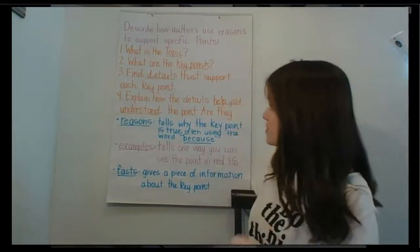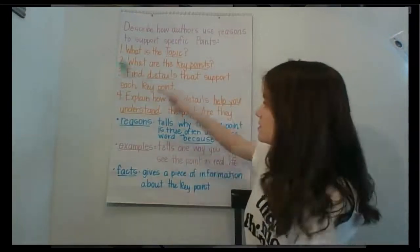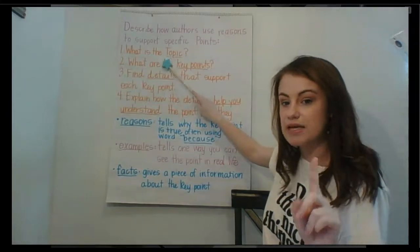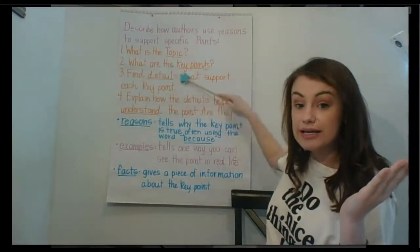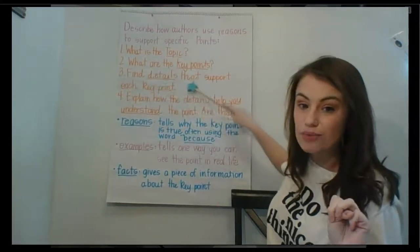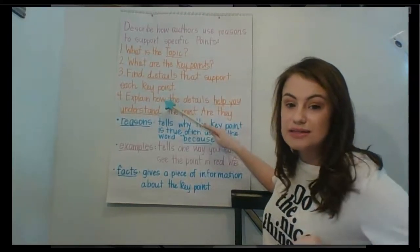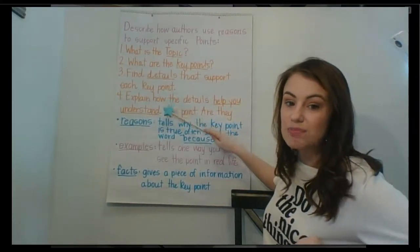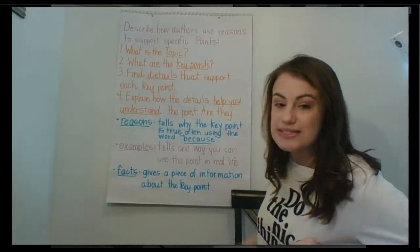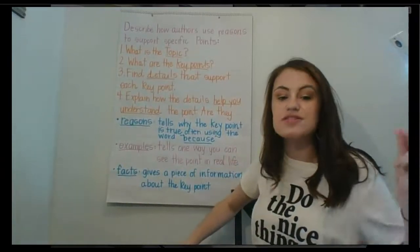I'm going to tell you the four steps that will help you describe how authors use reasons to support their key points. Step one: what is the topic? Step two: what are the key points? Step three: find details that support each key point. Step four: how do the details help you understand the point? The details can either be reasons, examples, or facts.